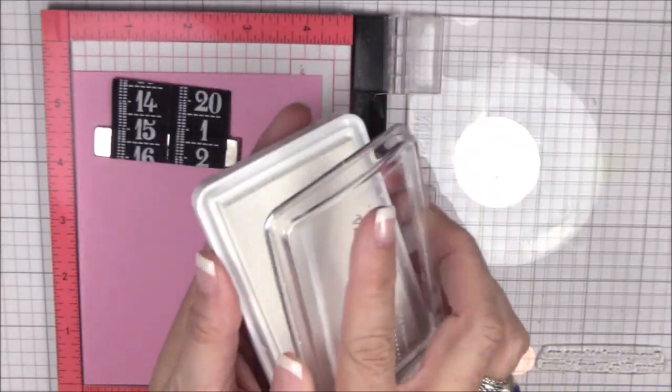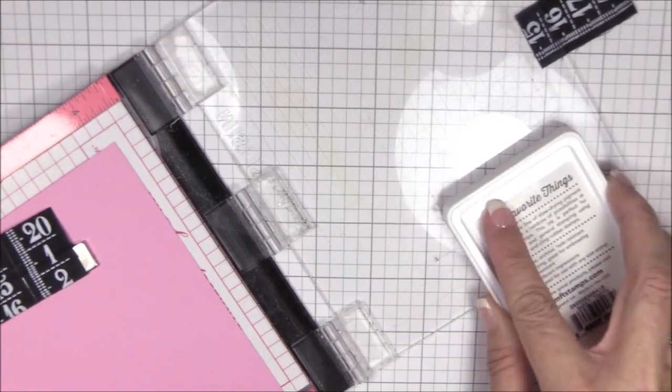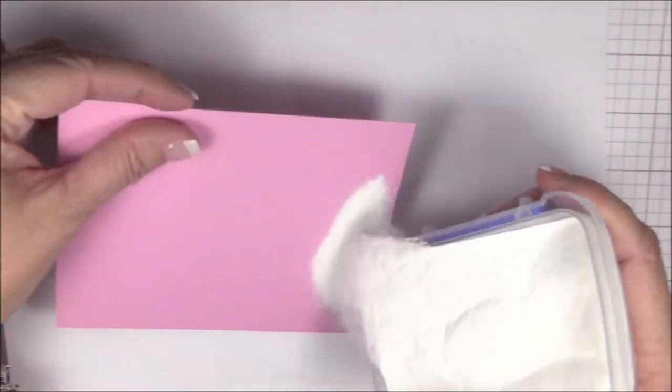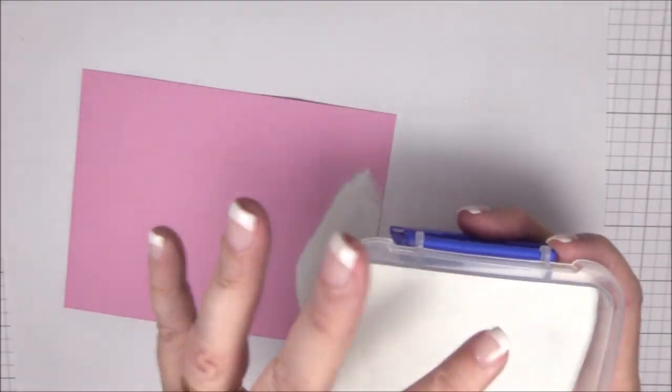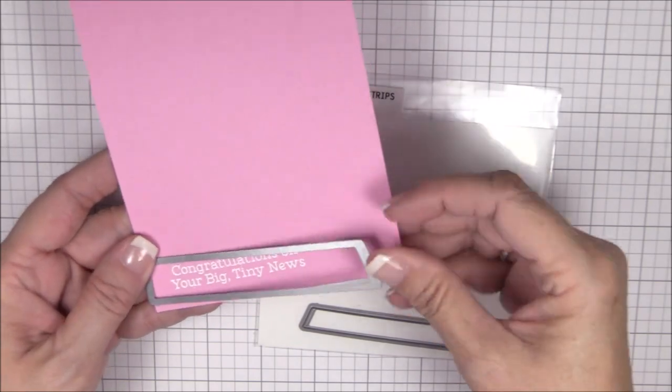While I have my mini MISTI out, I'll stamp the sentiment from the hello little one stamp set onto some cotton candy cardstock using sweet tooth pigment ink, and then I'll heat emboss it with some white embossing powder. Off camera, I'll die cut the sentiment using the slanted sentiment strips die-namics.